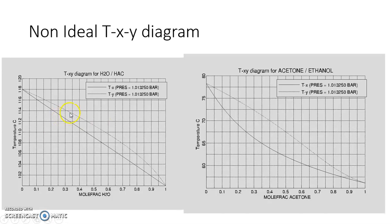If the non-ideality is very extreme, we tend to have an azeotropic system. An azeotrope is something wherein the bubble and dew point curves touch at one point, indicating that at a given temperature and pressure, the mole fraction Y1 in vapor phase and mole fraction X1 in liquid phase are the same. This makes separation impossible with a conventional distillation column — whatever number of stages you add, after every stage you get the same amounts of Y and X.